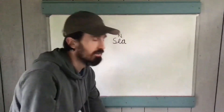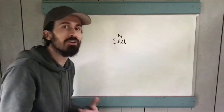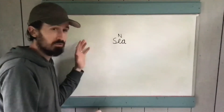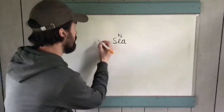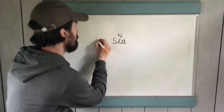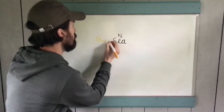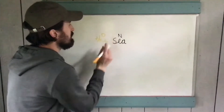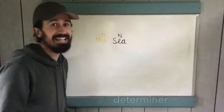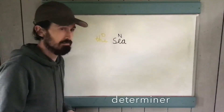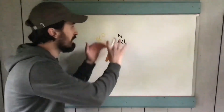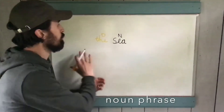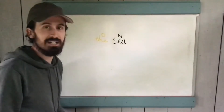We're going to expand it out in a very simple way initially. I just want to throw some terminology and vocabulary at you. For example, even just turning this into 'the sea' — we have included a determiner. So we've got determiner, then a noun. That creates a noun phrase. 'The sea' is a noun phrase immediately.